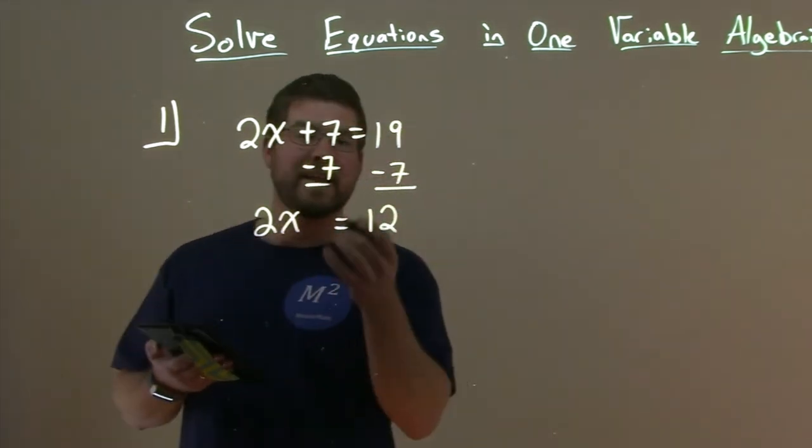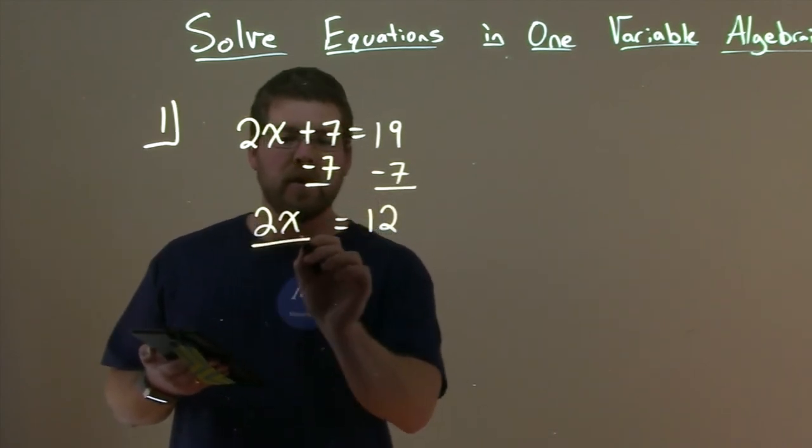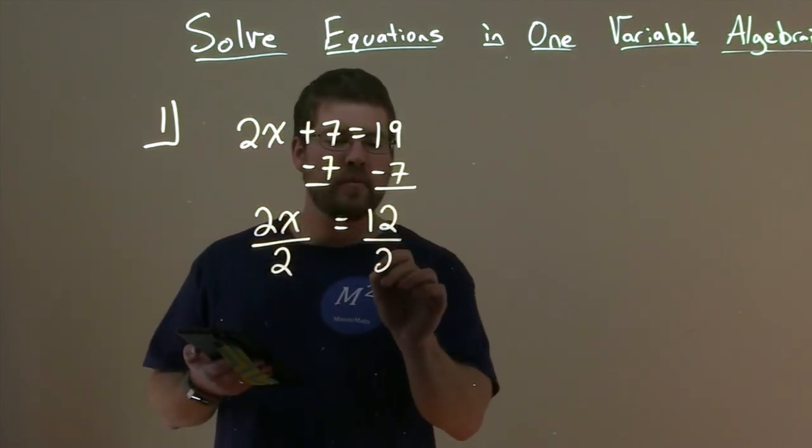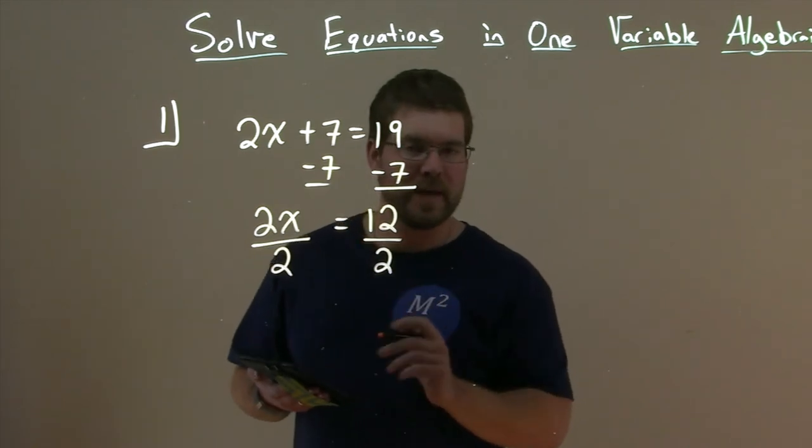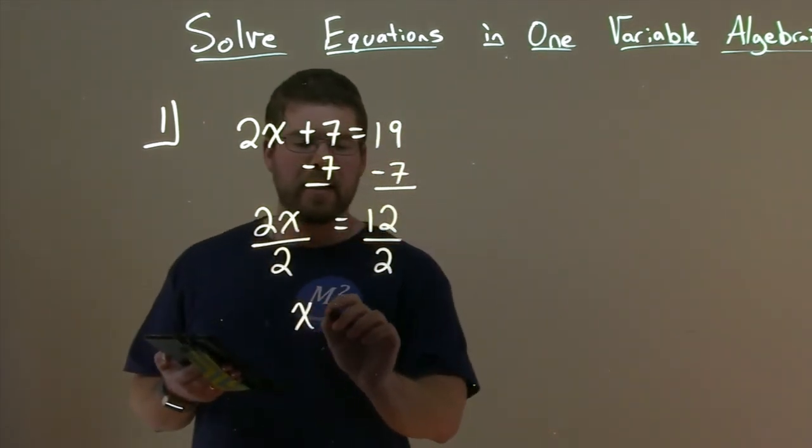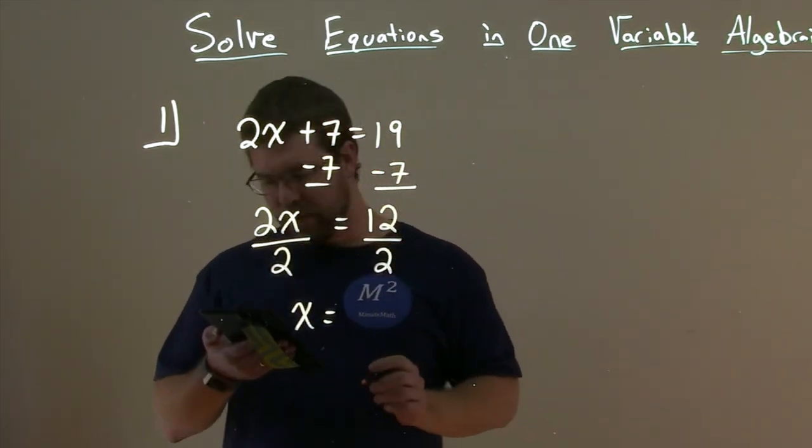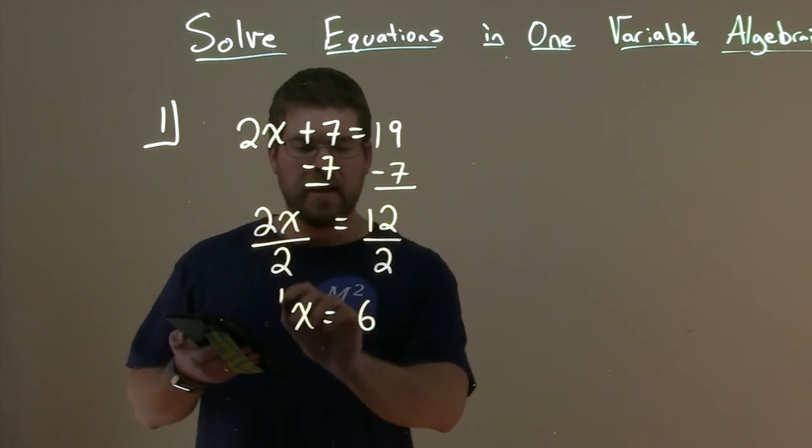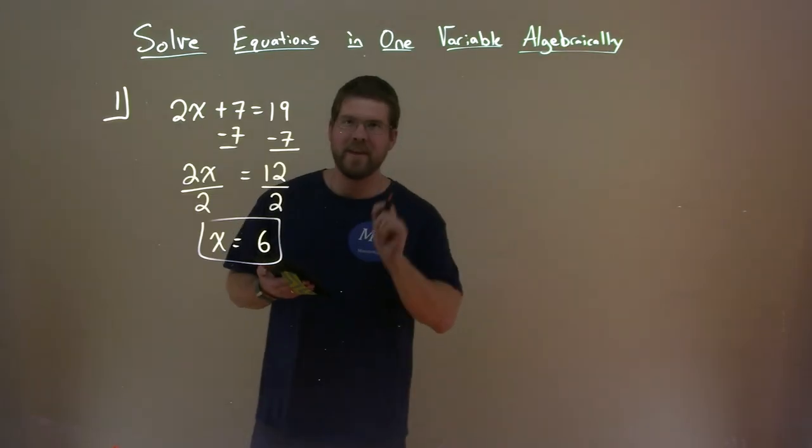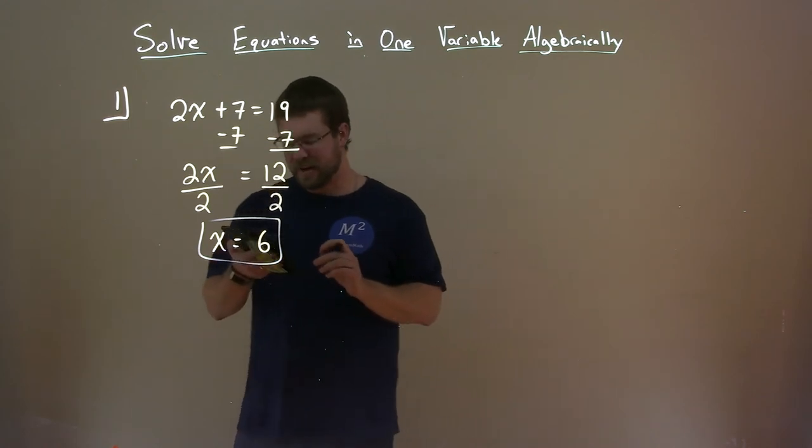Then from there, we still want to get x by itself. So we divide both sides by 2, opposite of that multiplication, division. x is now by itself, and 12 divided by 2 is 6. And now we have solved our first equation with one variable, algebraically.